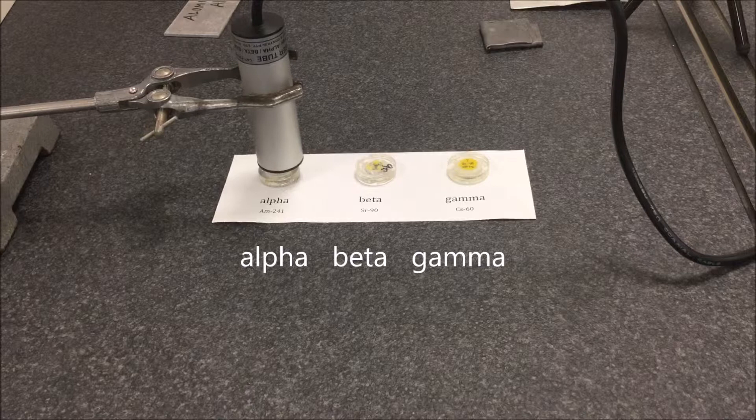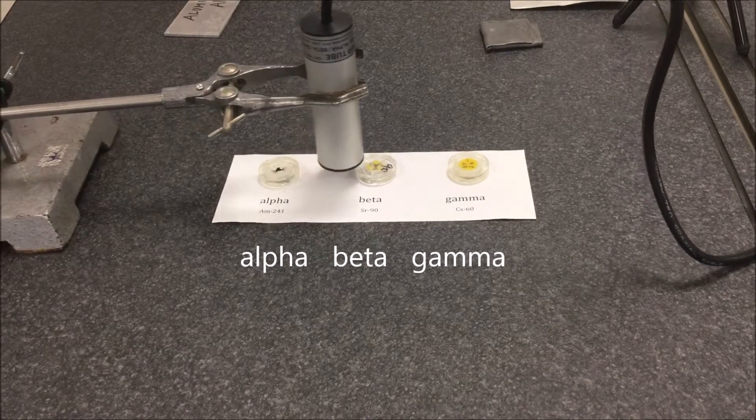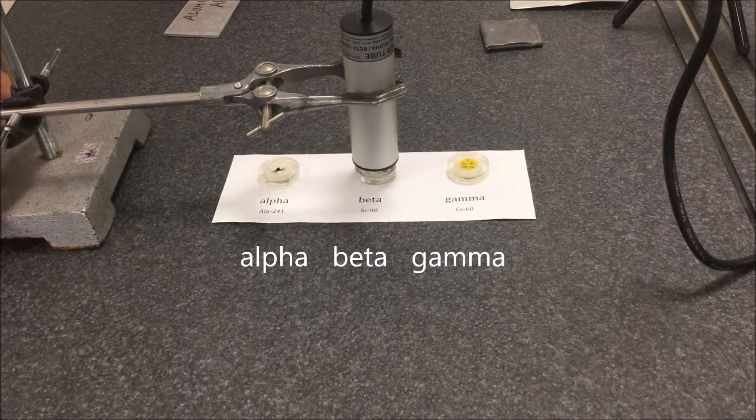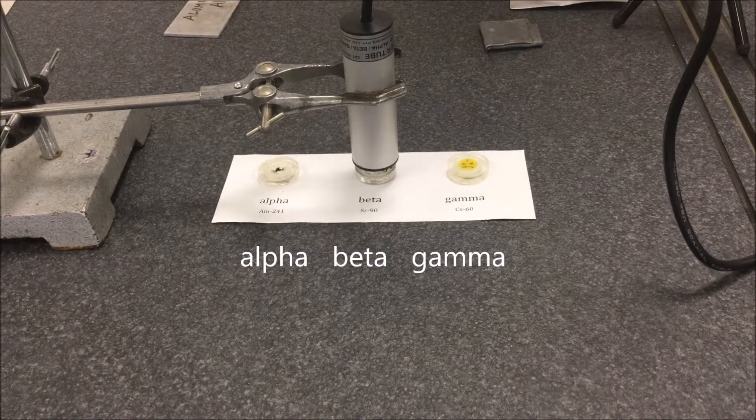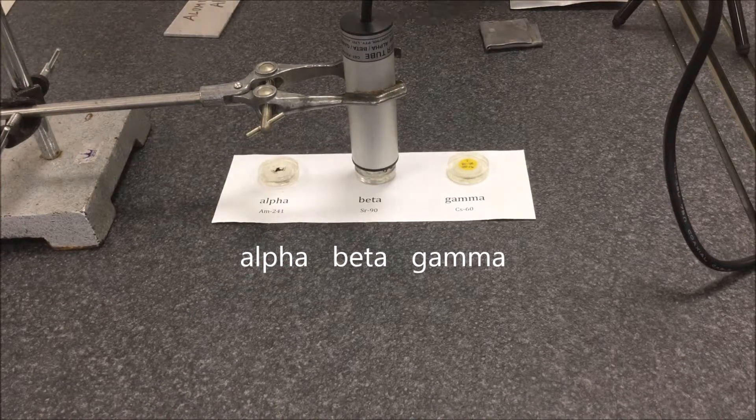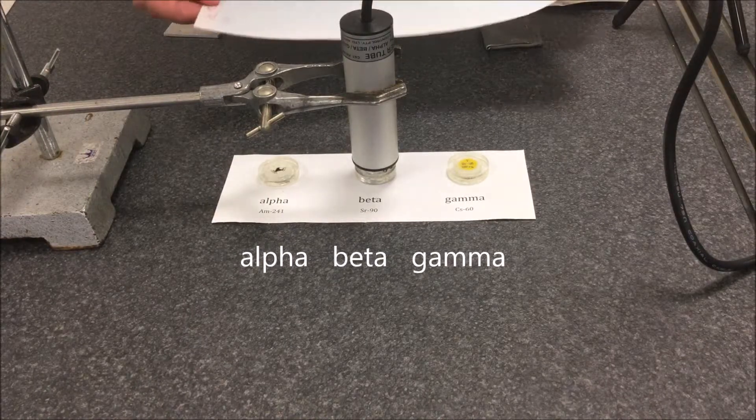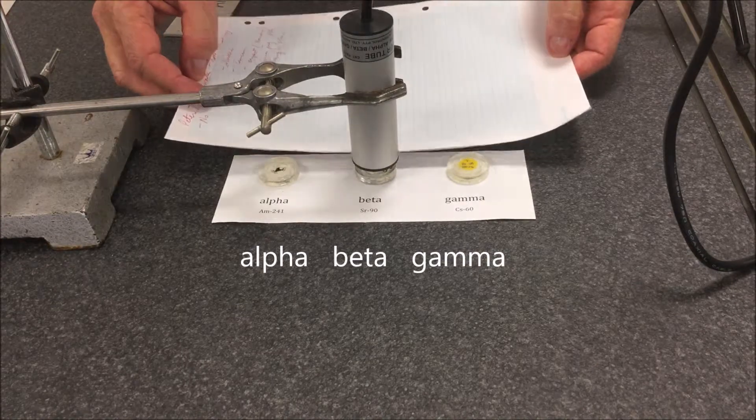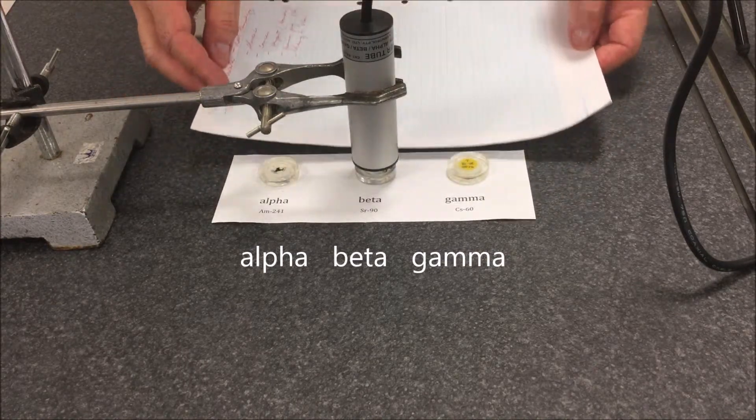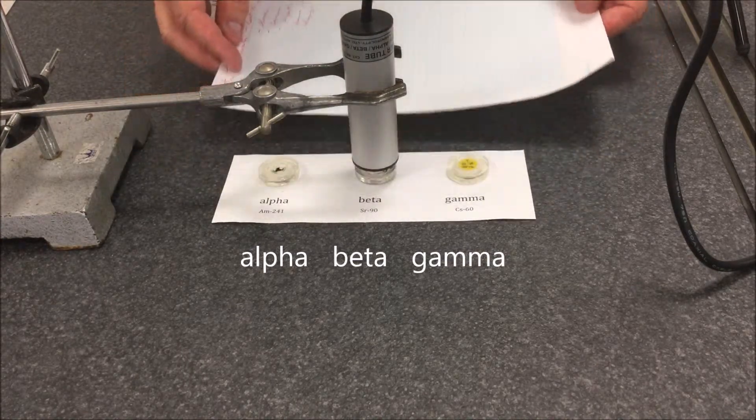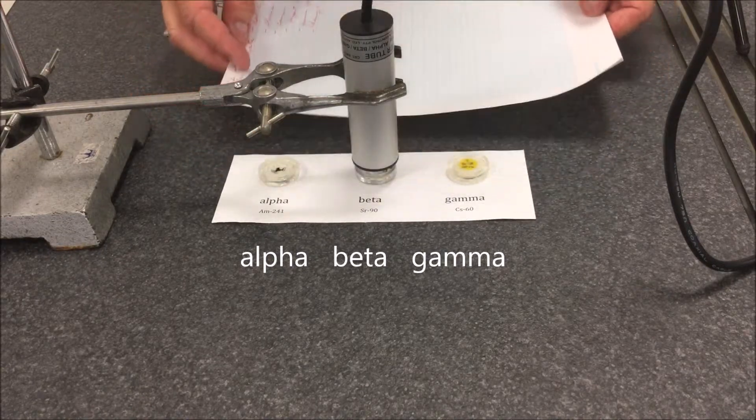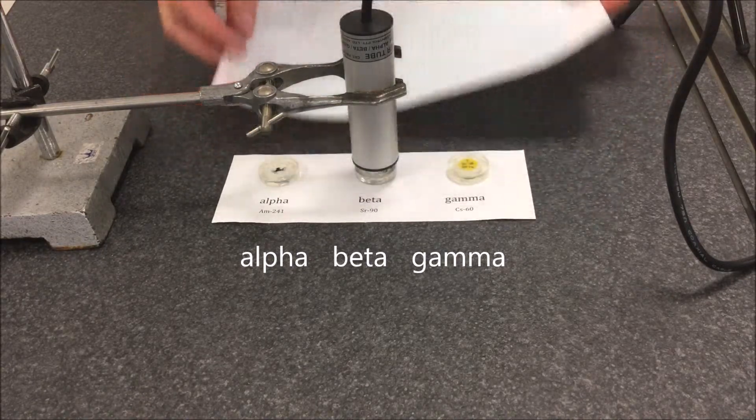I'll move on to a strontium-90 sample. This is a beta emitter. It's far more active. You can hear the activity. I'll put a piece of paper in there. There's no effect. So paper's not a barrier to beta particles.